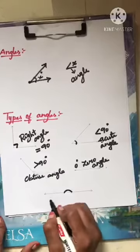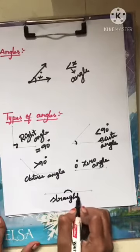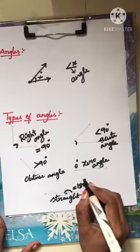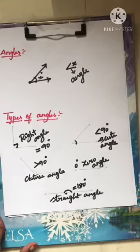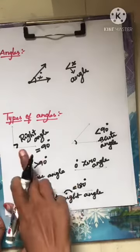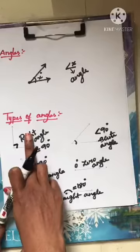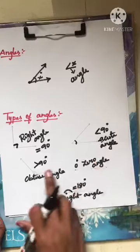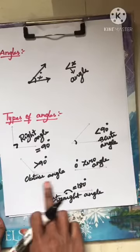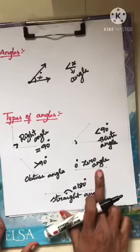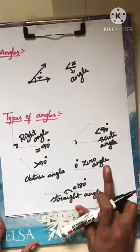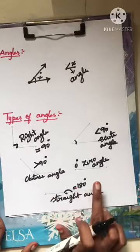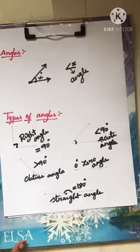Finally, we have the straight angle — it is a straight line equal to 180 degrees, which is 2 times 90. To recap: equal to 90 is right angle; less than 90 is acute angle; more than 90 is obtuse angle; no angle is zero angle; equal to 180 degrees is straight angle.